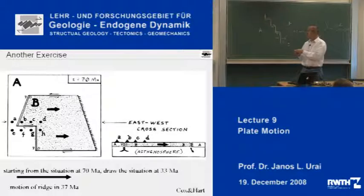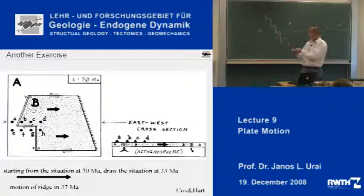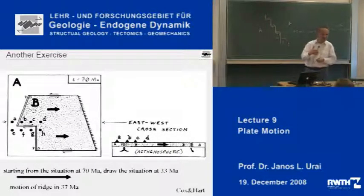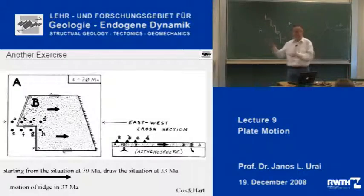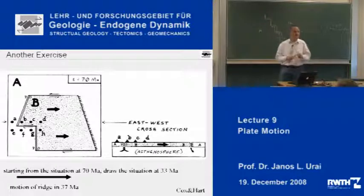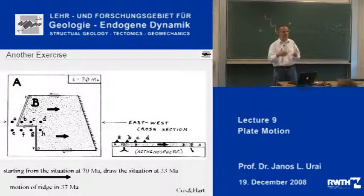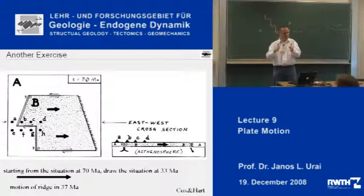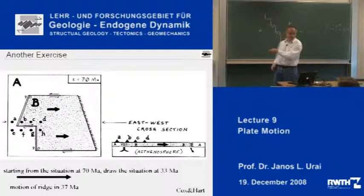The question is: what will happen here over geologic time? We have seen what happens on one side — that was the previous exercise. But on the other side, there is now a trench and the plate is subducted. Over time, plate B has a very bad future, because it has to be disappearing. After some time, all of plate B has been subducted, and the gap here will be filled by new plate A.